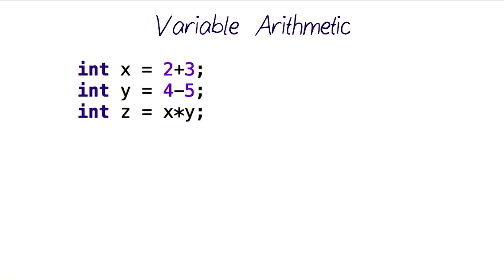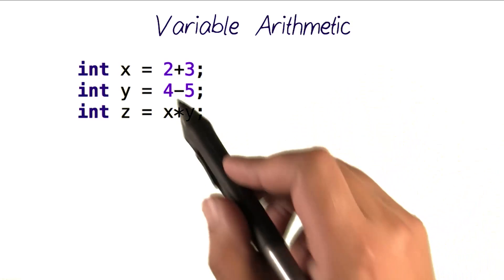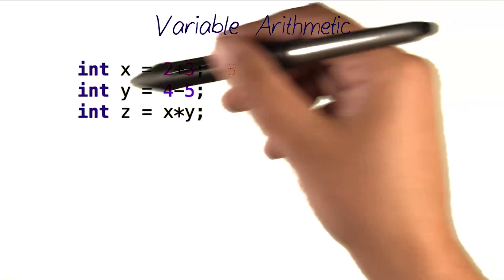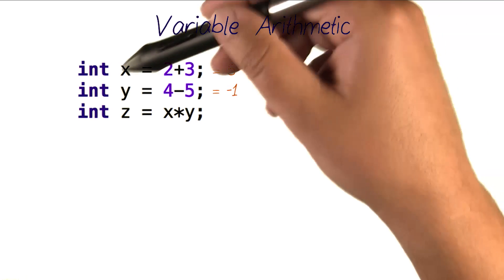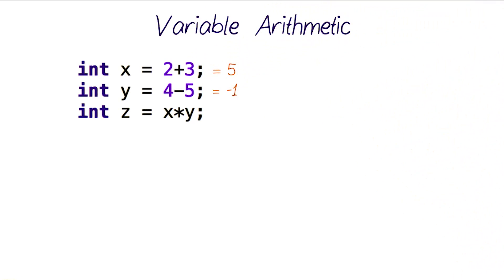All these operations can also be applied to variables themselves. Like if we had this setup, for example, where x equals 2 plus 3, which evaluates to 5, and y equals 4 minus 5, which evaluates to negative 1. So x has the value 5 in it, and y has the value negative 1.